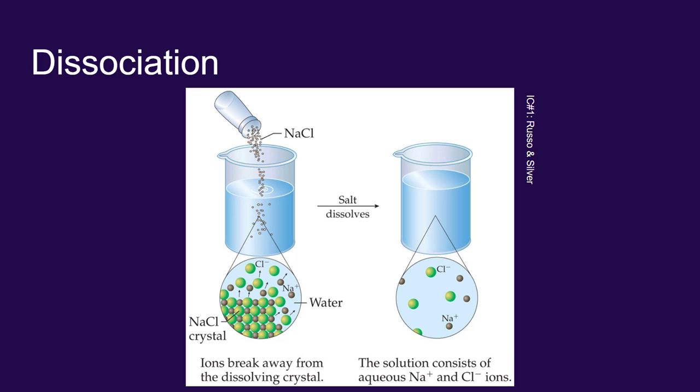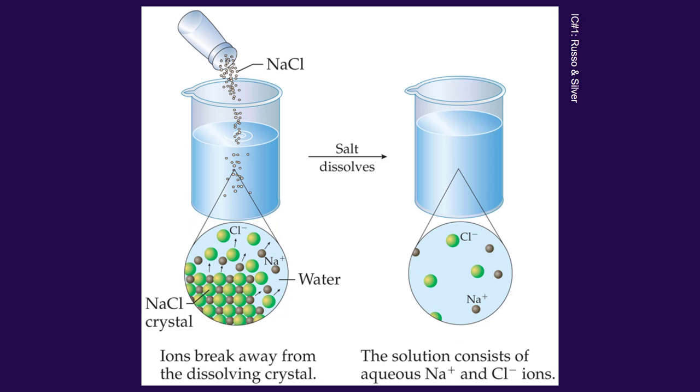When you look at the dissociation process, when you look at an ionic compound breaking apart and dissolving in water, we see that it's the individual ions that separate. When sodium chloride dissolves in water or when sodium chloride is aqueous, you no longer actually have sodium chloride bonded together. You have free floating chloride ions and free floating sodium ions just drifting around in the water.